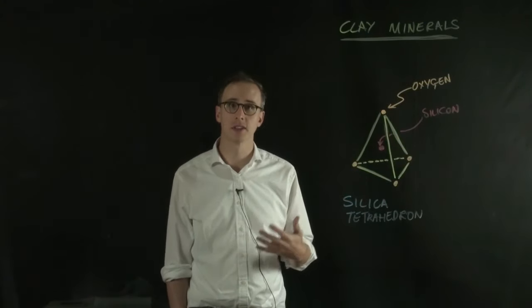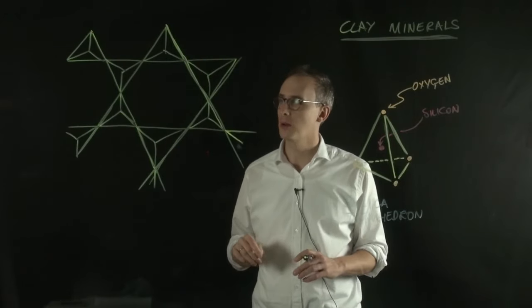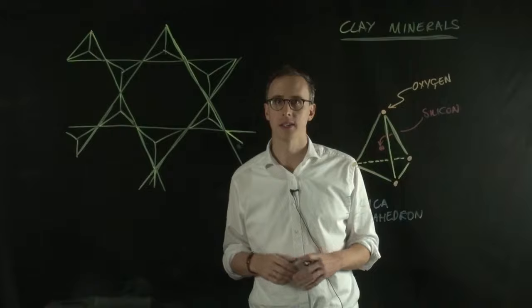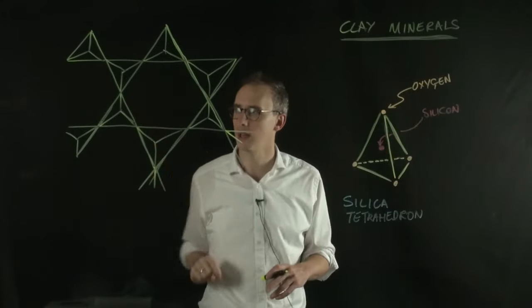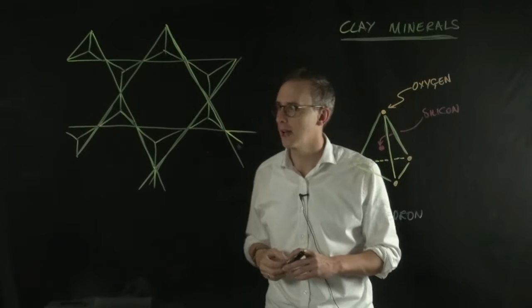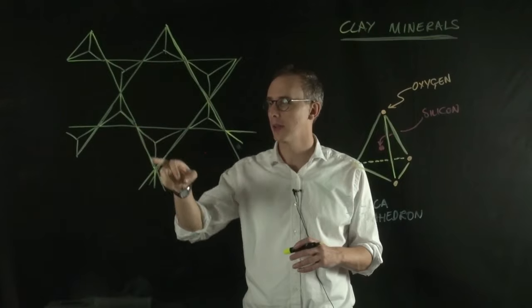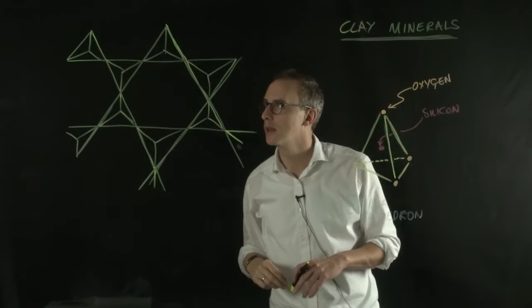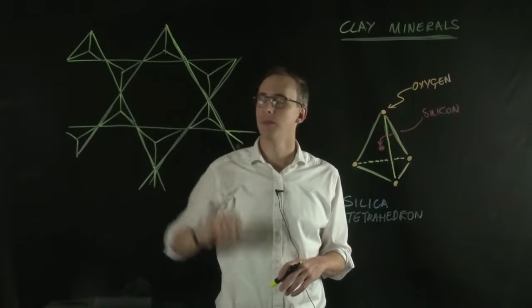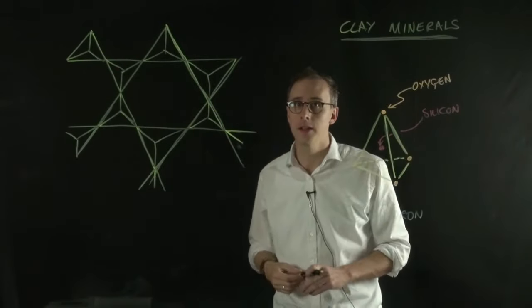The sheets look something like this. If I look from above down onto one of these sheets of silicate tetrahedron, the arrangement looks something like this, where we have individual silicate tetrahedron joined together to other silicate tetrahedron by their oxygen atoms. And in the middle of each of these triangles, we'll have a silicon atom. This is what it looks like looking down onto it.